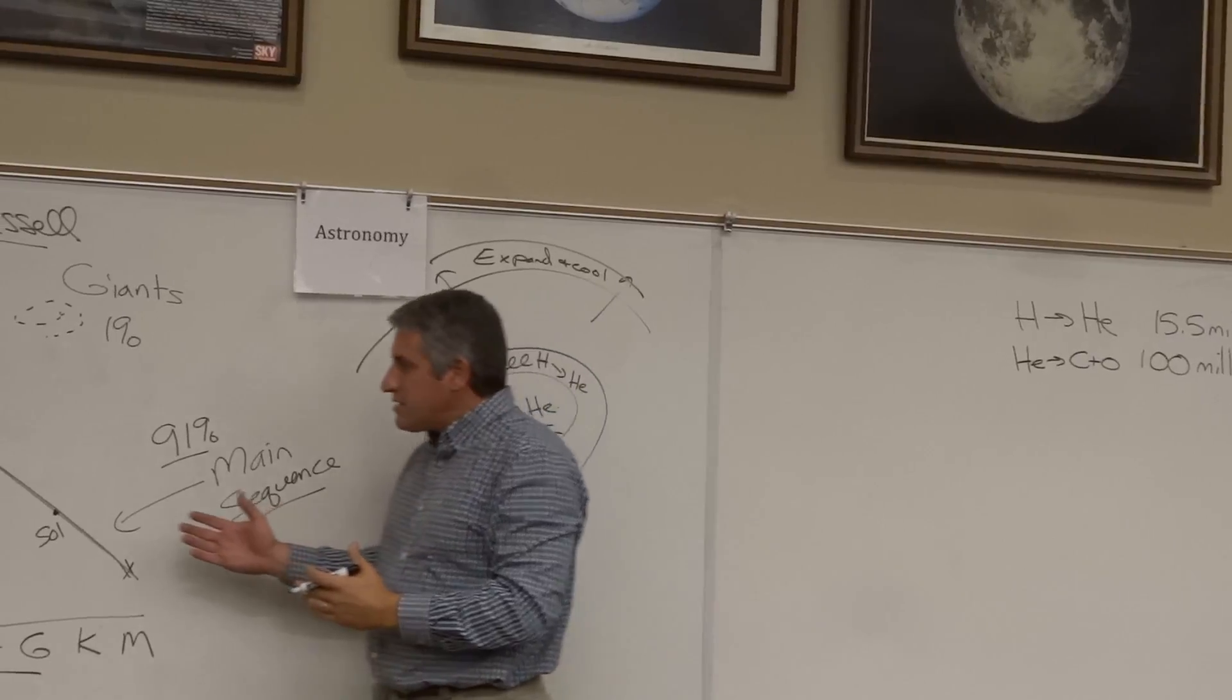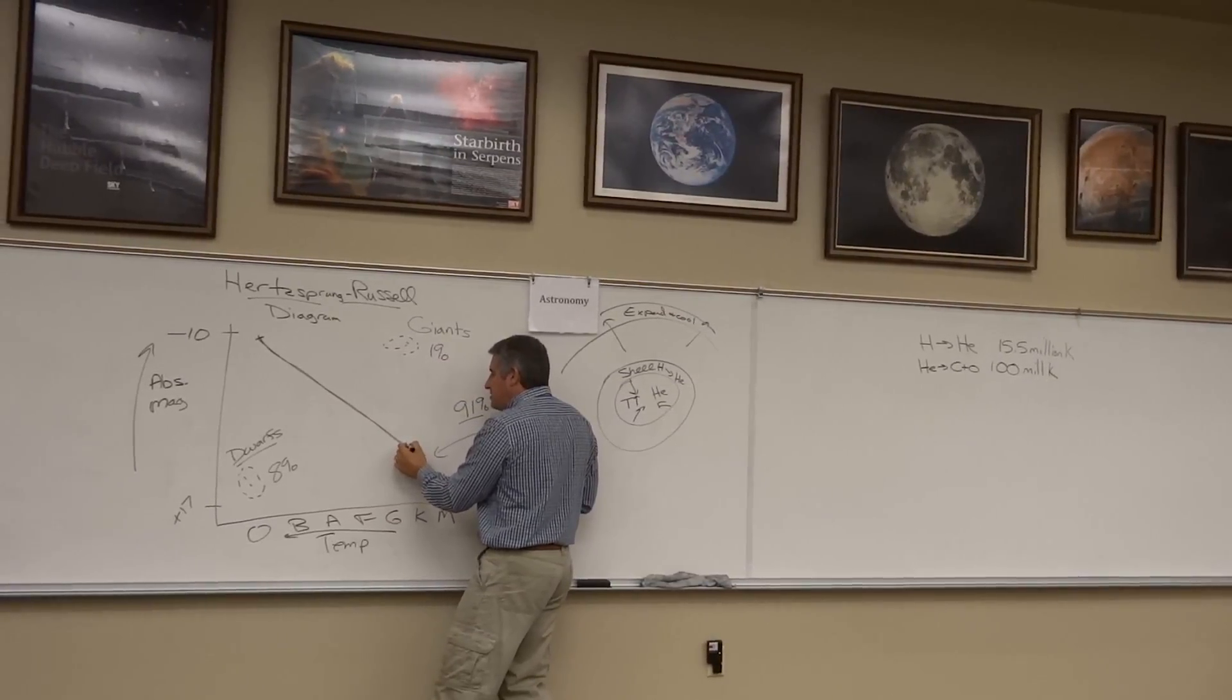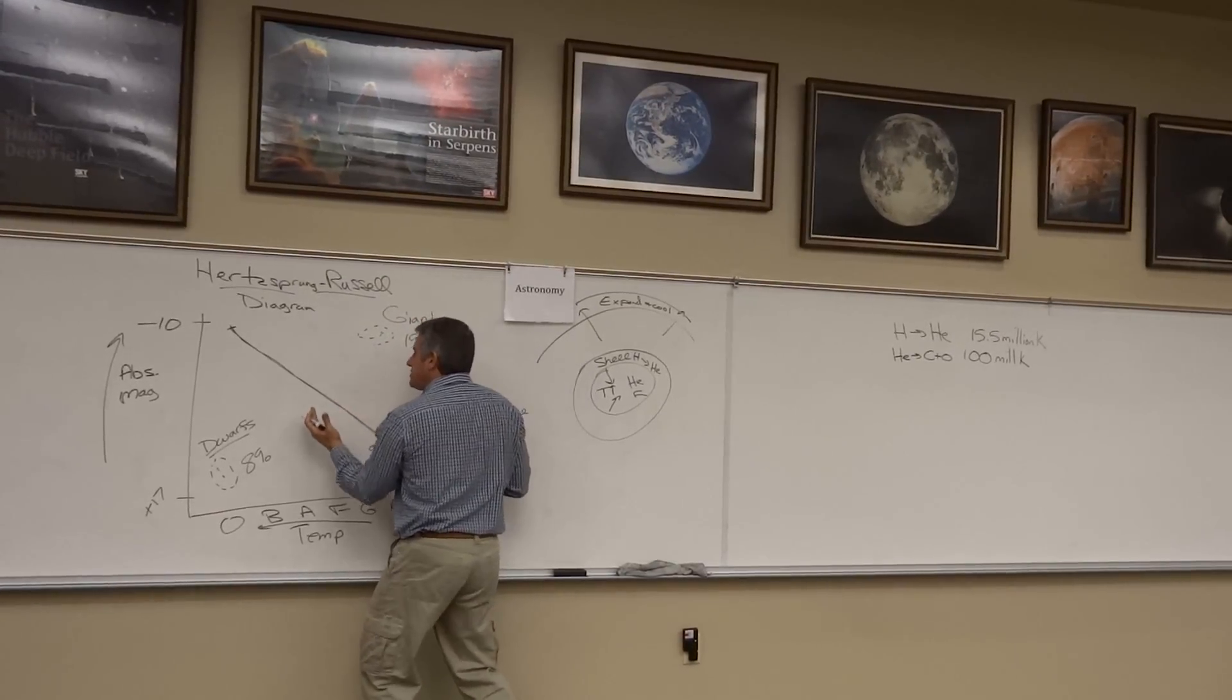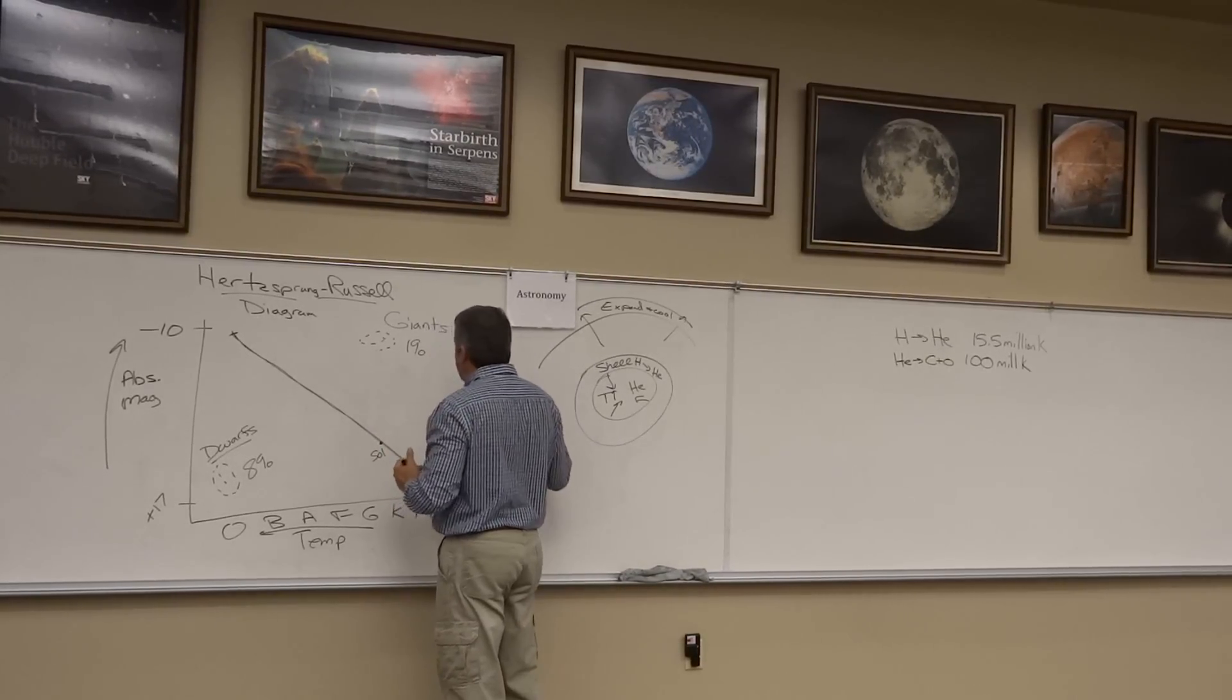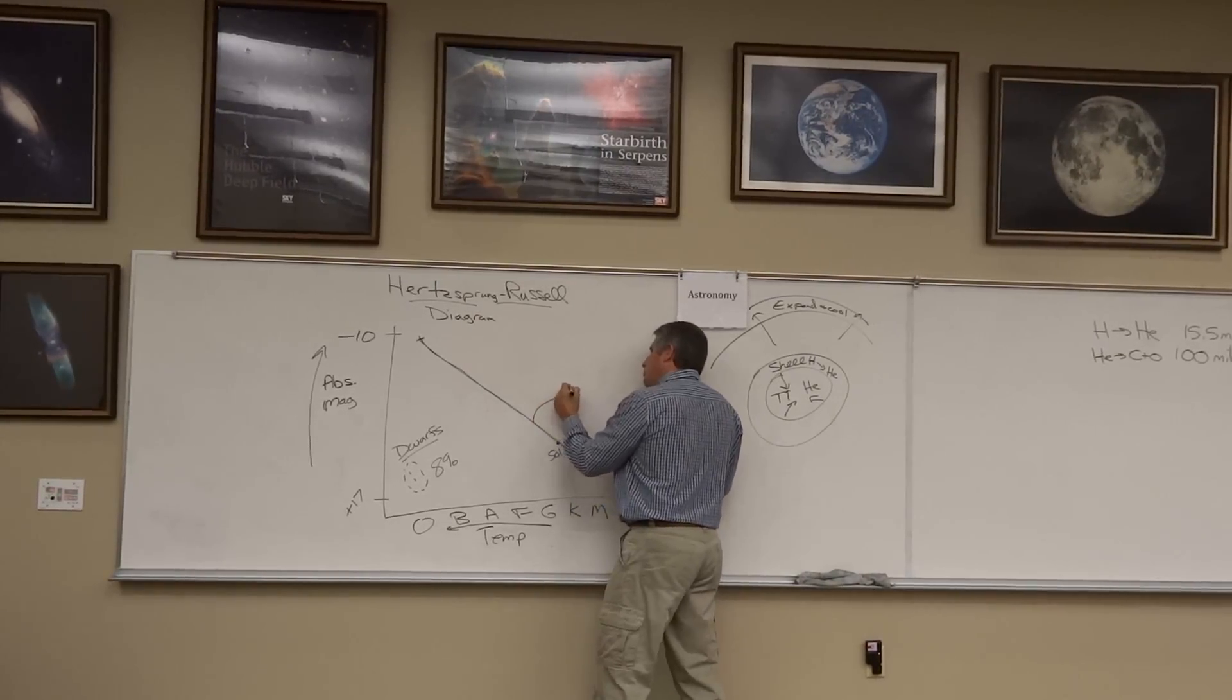So what happens here is when we look at the star's temperature and brightness, the star begins to get bigger and cooler. Bigger means brighter, cooler means to the right. So the star will move off of the main sequence and begin to move up and to the right.